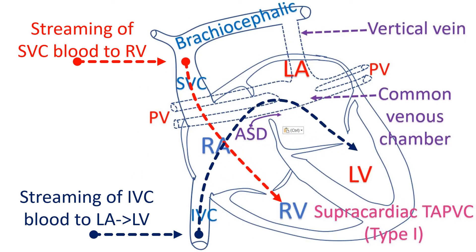Another very rare situation in which reverse differential cyanosis has been reported is supracardiac total anomalous pulmonary venous connection with streaming of highly saturated superior vena caval blood into the right ventricle. It was pumped into the pulmonary artery and across a patent ductus arteriosus into the descending aorta in a neonate. Desaturated inferior vena caval blood was streaming to the left atrium across the atrial septal defect. Hence, desaturated blood reached the upper limbs through the left ventricle and aorta, producing reverse differential cyanosis.